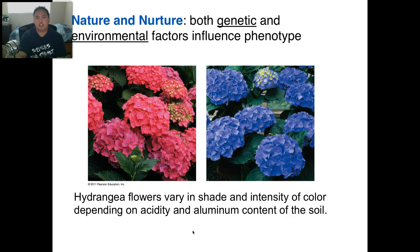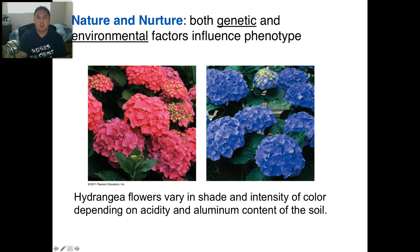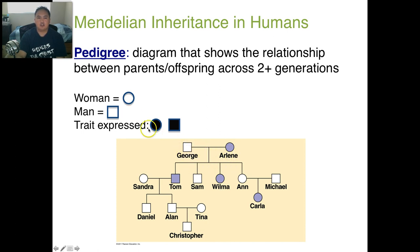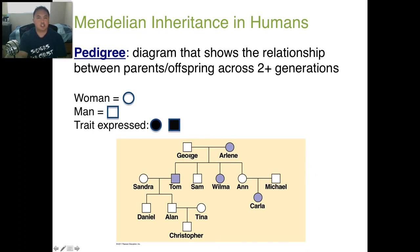When talking about physical appearance — your phenotype — it's not only genetic but also environmental. These hydrangea flowers, for example, have a shade and intensity of color that depends not only on their parents but also on the acid and aluminum content of the soil. So phenotype is not only genetic. To figure out how inheritance works in humans, they do pedigrees — putting males in squares and females in circles, with filled shapes for expressed traits. This is how they determine how traits are passed down in a family.